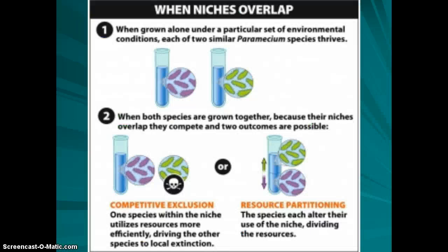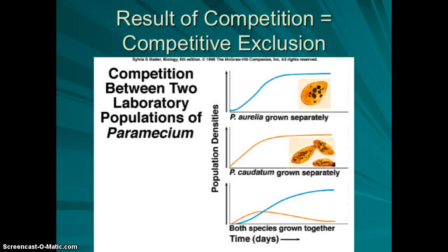When two niches overlap, competition can lead to one of two outcomes: competitive exclusion or resource partitioning. Competitive exclusion means one organism outcompetes the other, eventually driving it to extinction. For example, two species of Paramecium occupy very similar niches — grown separately both thrive, but together one outcompetes the other and it begins to die off.